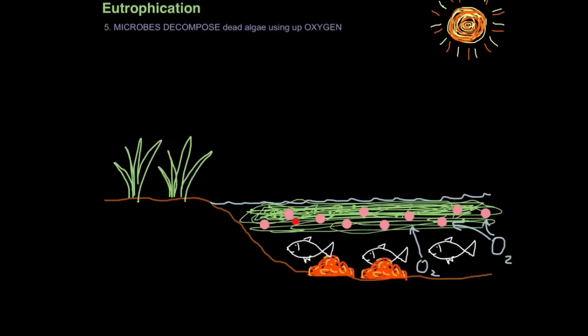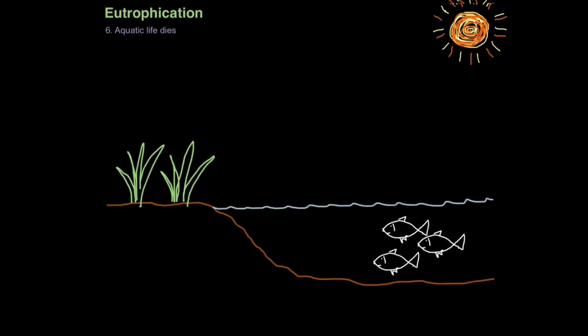So microbes start decomposing the algae and in that process they use up the oxygen in the water. So because there's now no oxygen in the water, all aquatic life dies. When water lacks oxygen in this way, we refer to it as a dead zone. And if you think this is just sort of make-believe stuff, then you should visit the Gulf of Mexico, where they have a huge dead zone as a result of eutrophication. So there's a lot of information there and it can be a bit overwhelming, so please rewind and look at what I've written down because that's what you would need to write in an exam to get full marks.